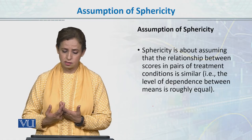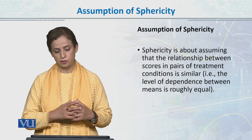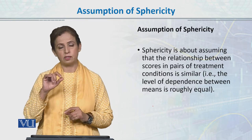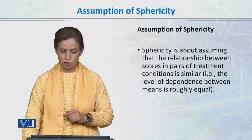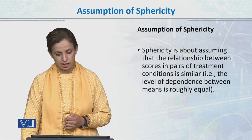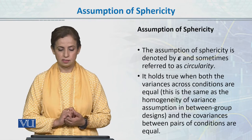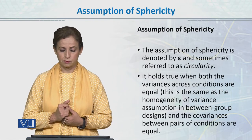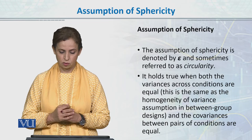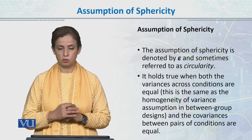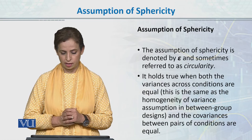Sphericity is about assuming that the relationship between scores in pairs of treatment conditions is similar. So हम pairs of treatment conditions पर focus करते हैं rather than treatment conditions themselves. The assumption of sphericity is denoted by E and sometimes referred to as circularity. It holds true when variances across conditions are equal — same as homogeneity of variance in between-group ANOVA.